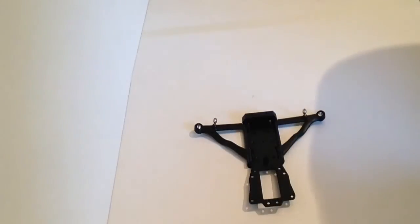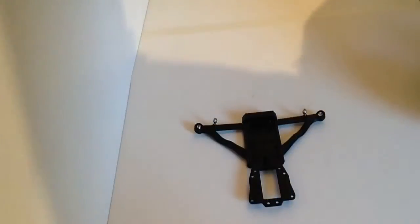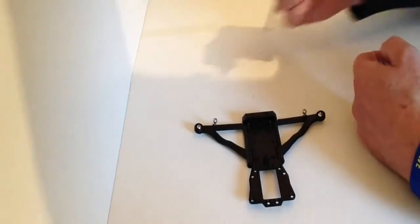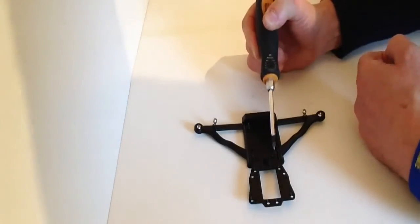Now take two of the smaller screws, the countersunk ones, and we're going to place those in this area here and this area here.